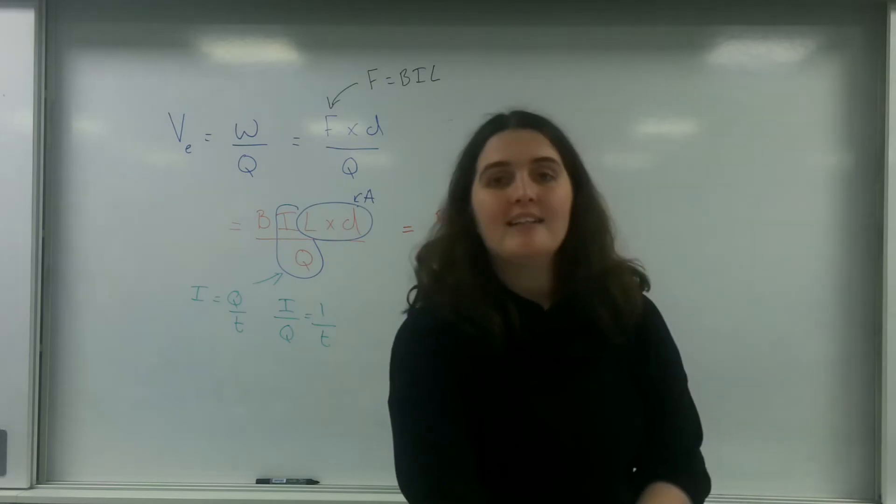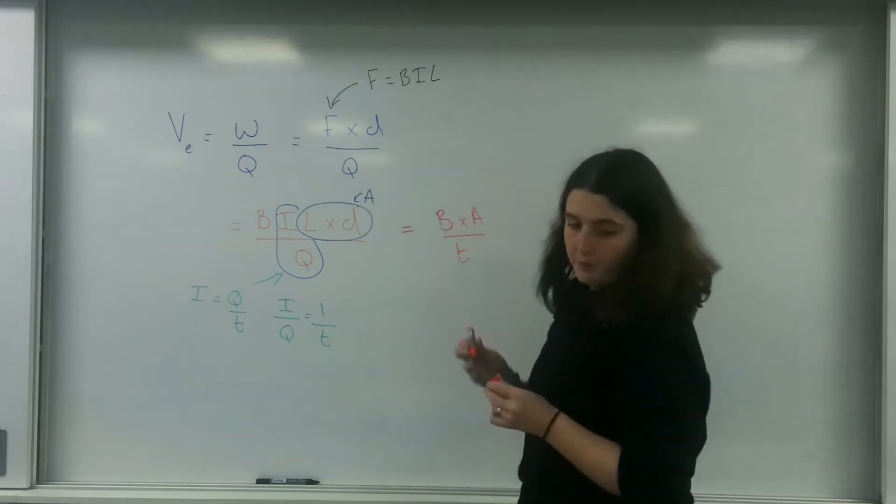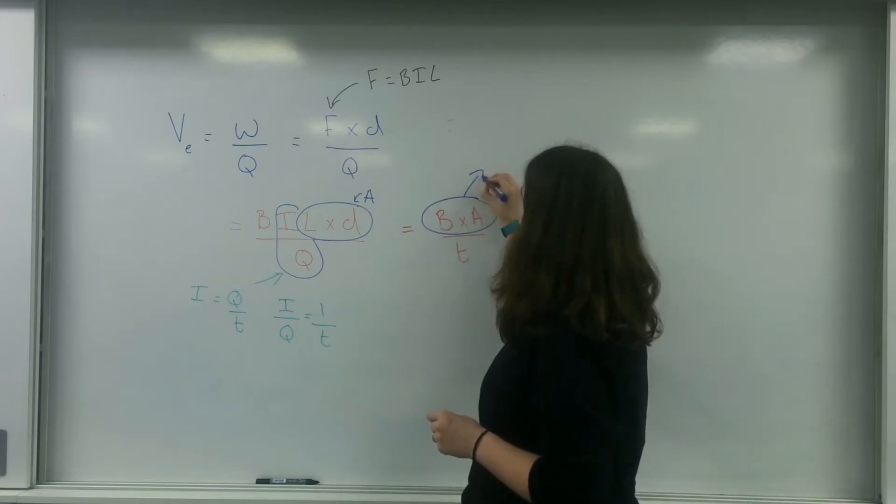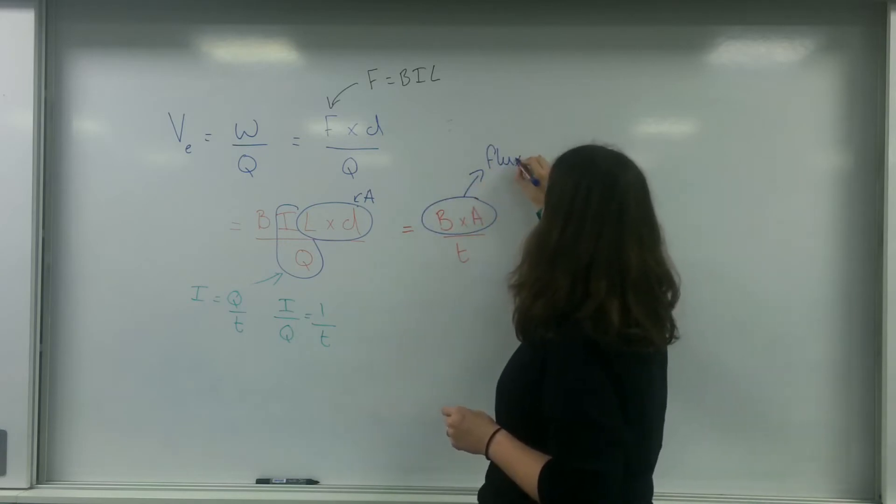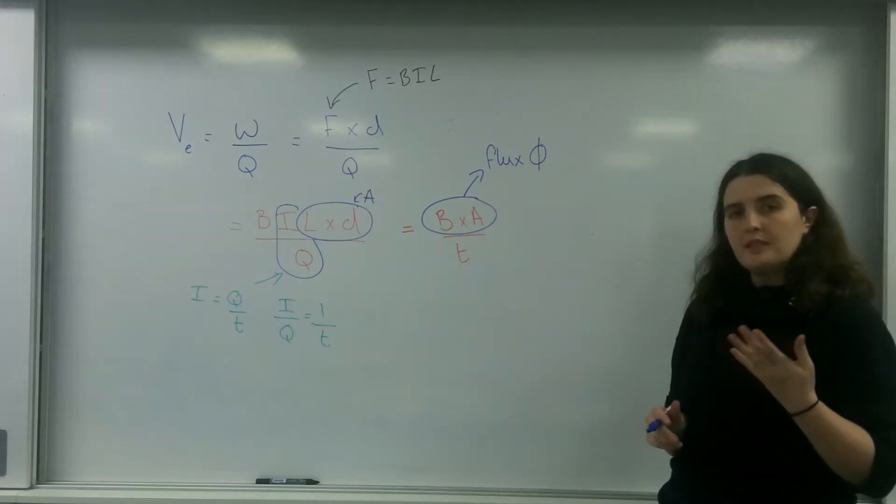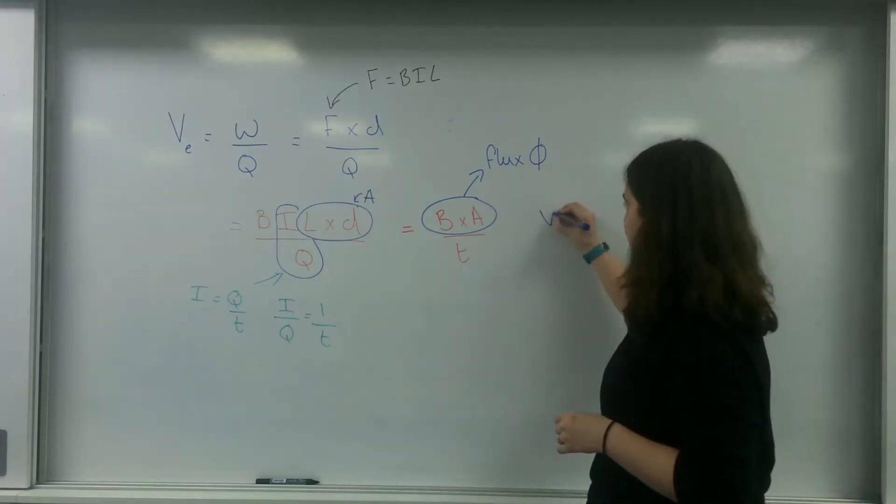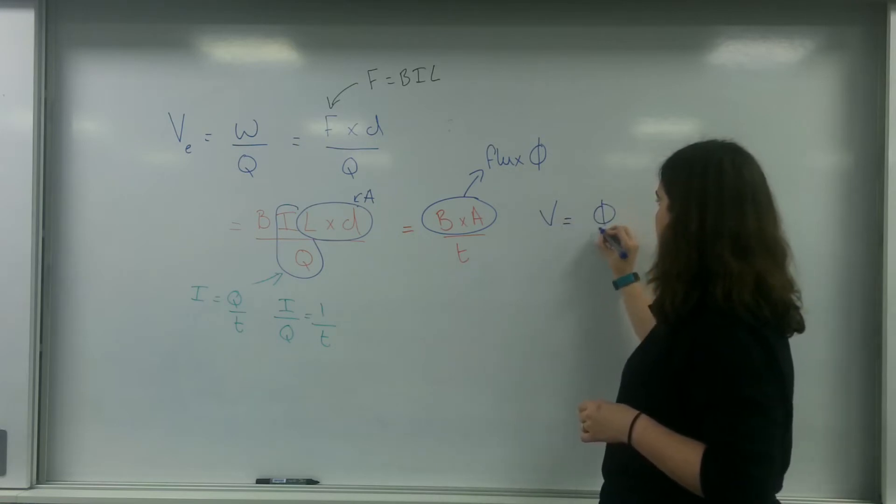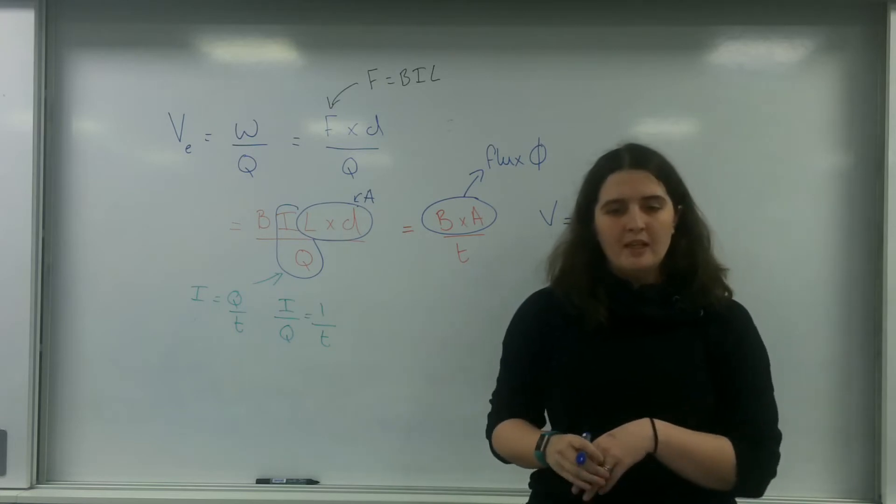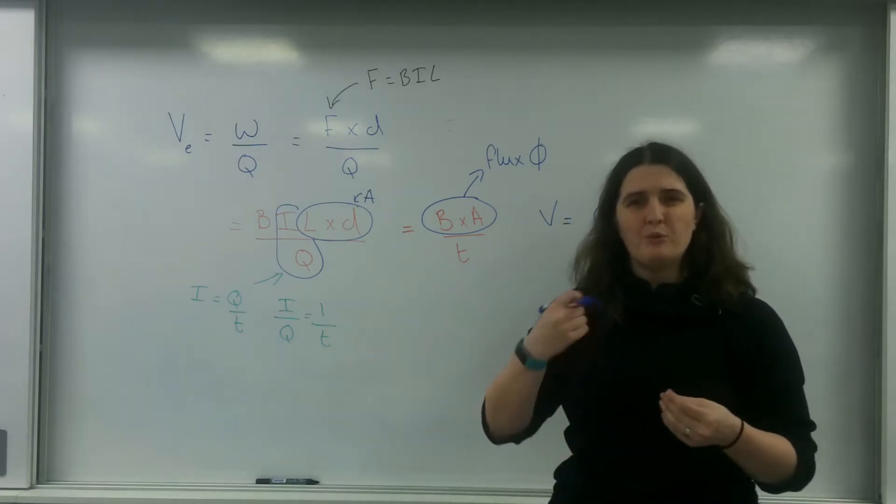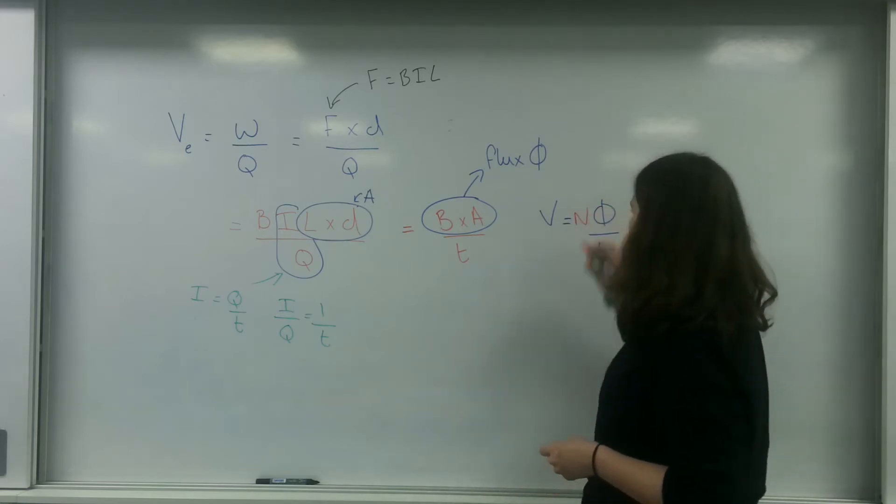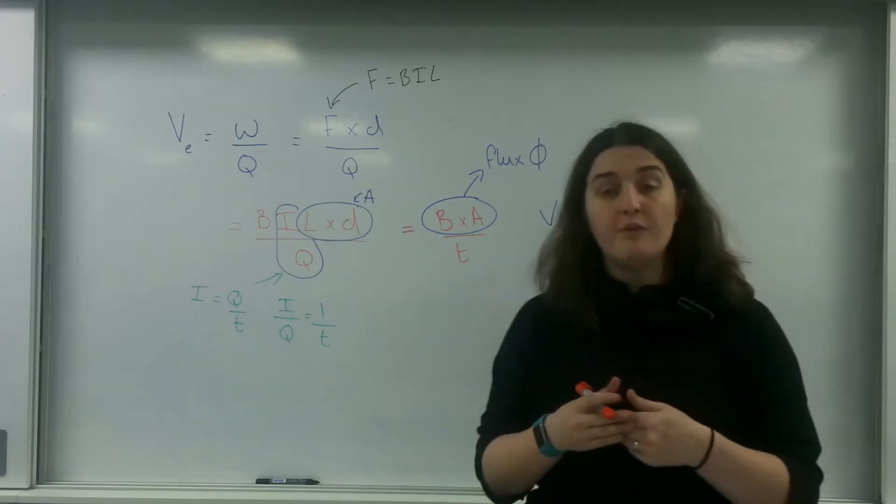This here, we've done it before in my previous video, this here is flux or phi. So what this is telling me here is that potential equals flux over time. And of course, when we're dealing with a coil of wire, we're going to talk about the flux linkage.